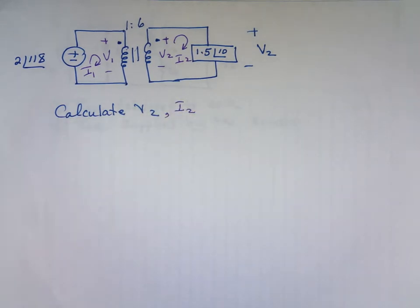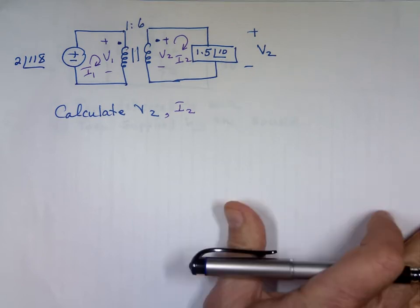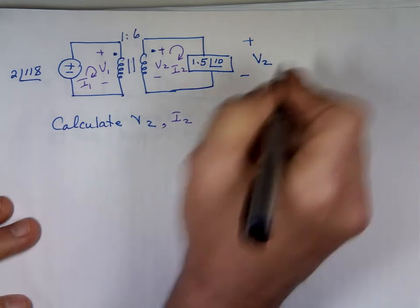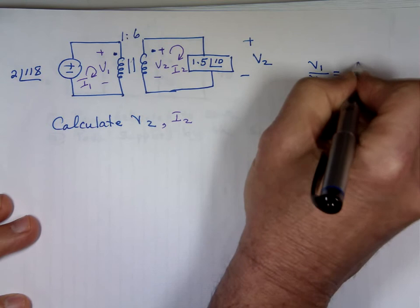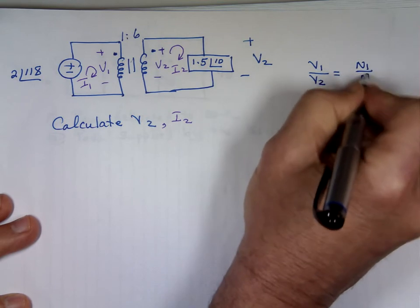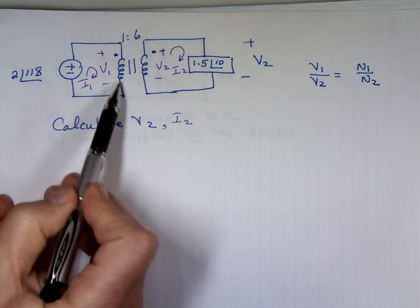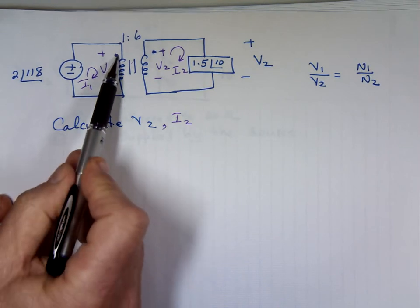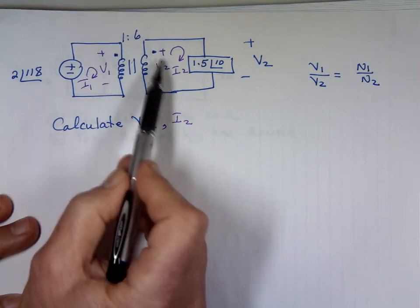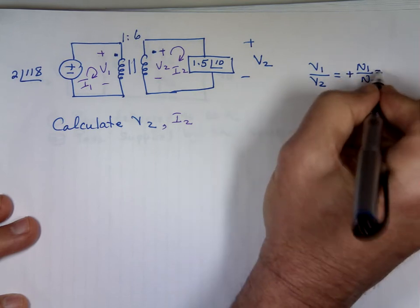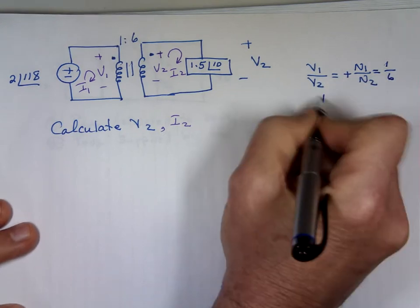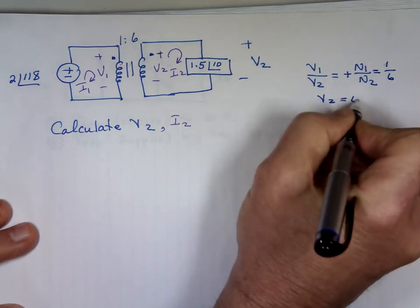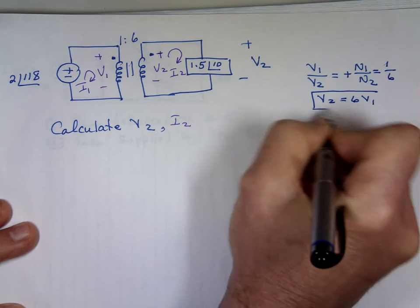We have an ideal transformer, so the first thing we need to do is the ratios. The ratio is v1 to v2. I know it's n1 to n2, but is it plus or is it minus? Let's see, v1 the way it's labeled, I labeled v1 plus on the dot and v2 plus on the dot, so that's a plus. So that's n1, that's 1 to 6.